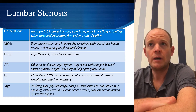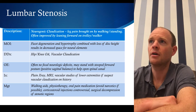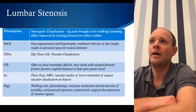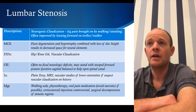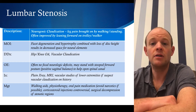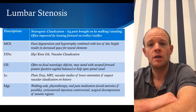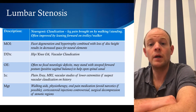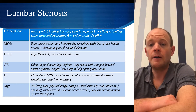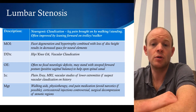Acetaminophen and ibuprofen might not be enough. They might have liver disease from alcoholism or kidney disease from diabetes — there are going to be many reasons why some medications aren't appropriate in these patients. Narcotics cause a great deal of problems within the elderly population: they increase the risk of falls and increase medical comorbidities. So we really have to be careful with the medical treatment in these patients.